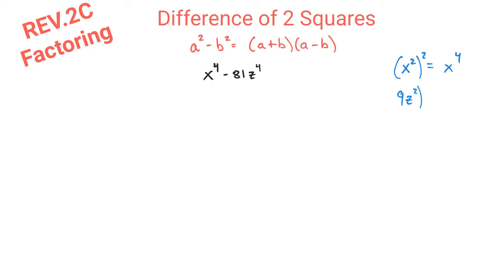Also, 9z^2, when you square that, since if you're squaring a product inside the parentheses, you have to square both parts, so that is going to equal 81z^4.